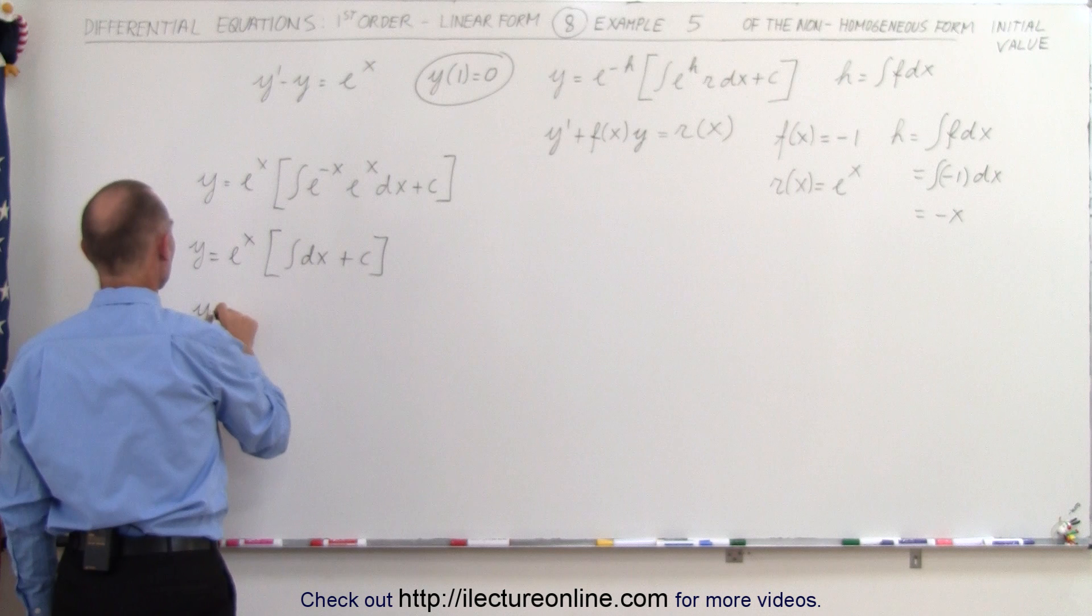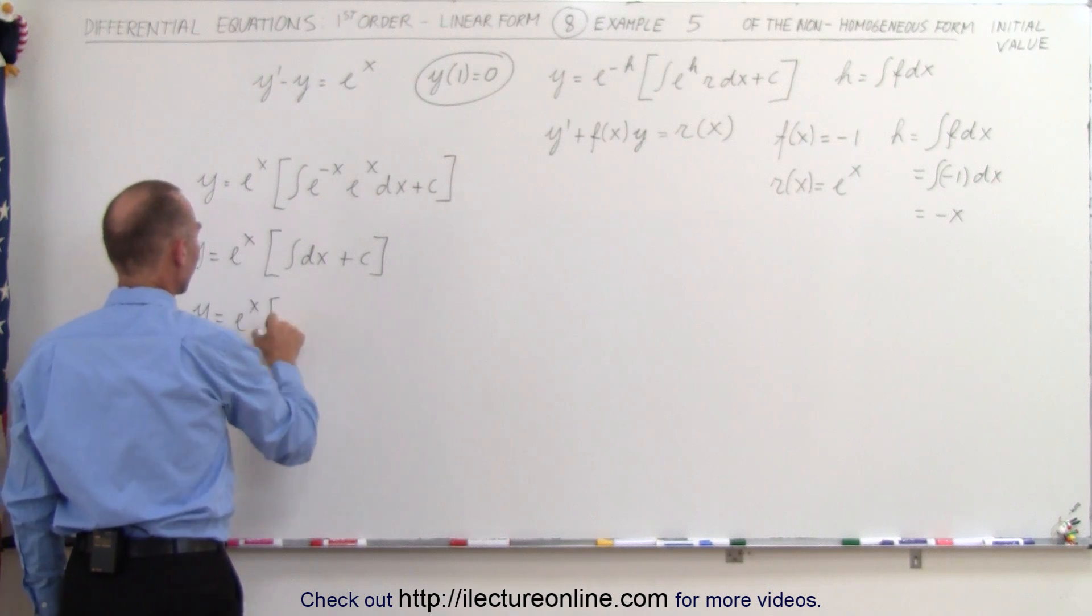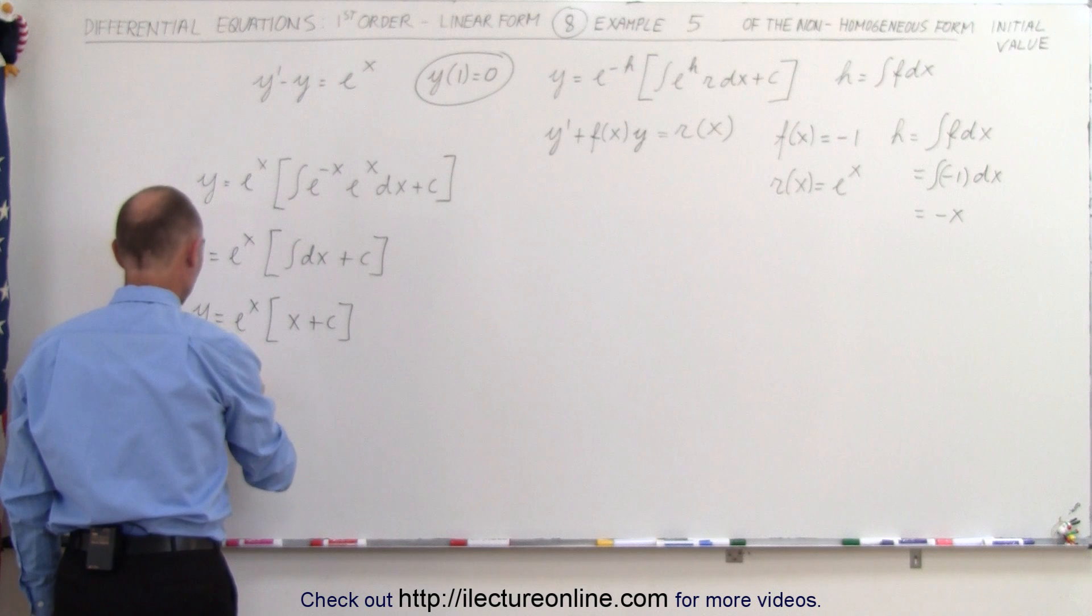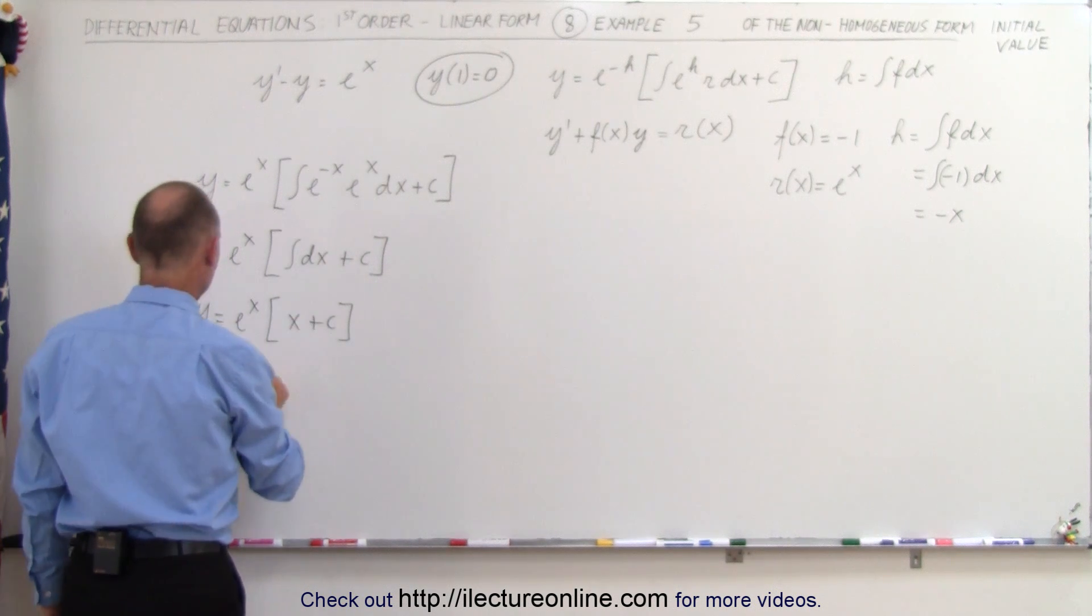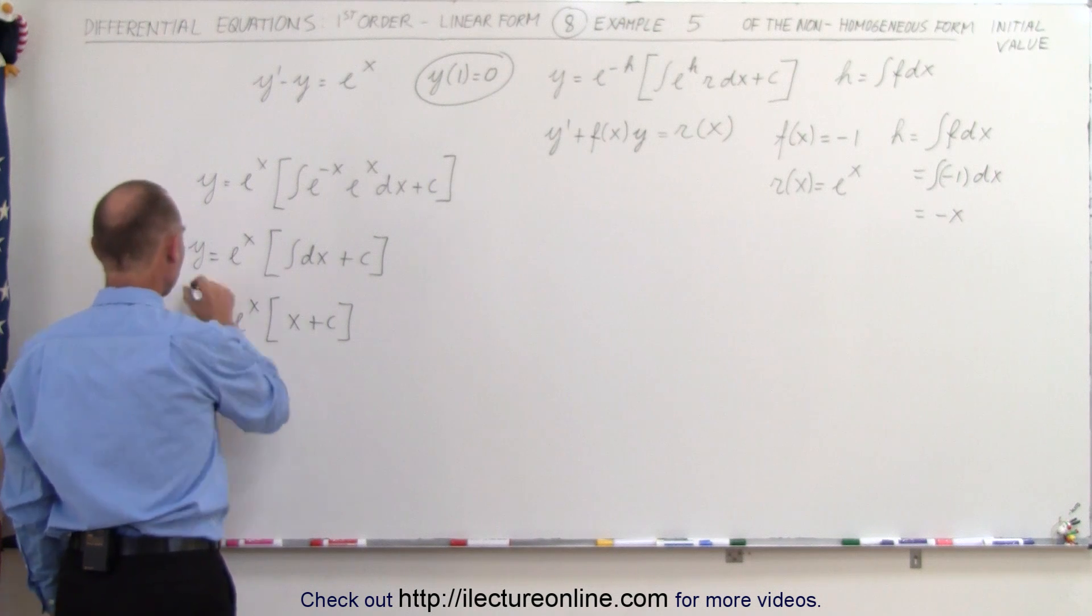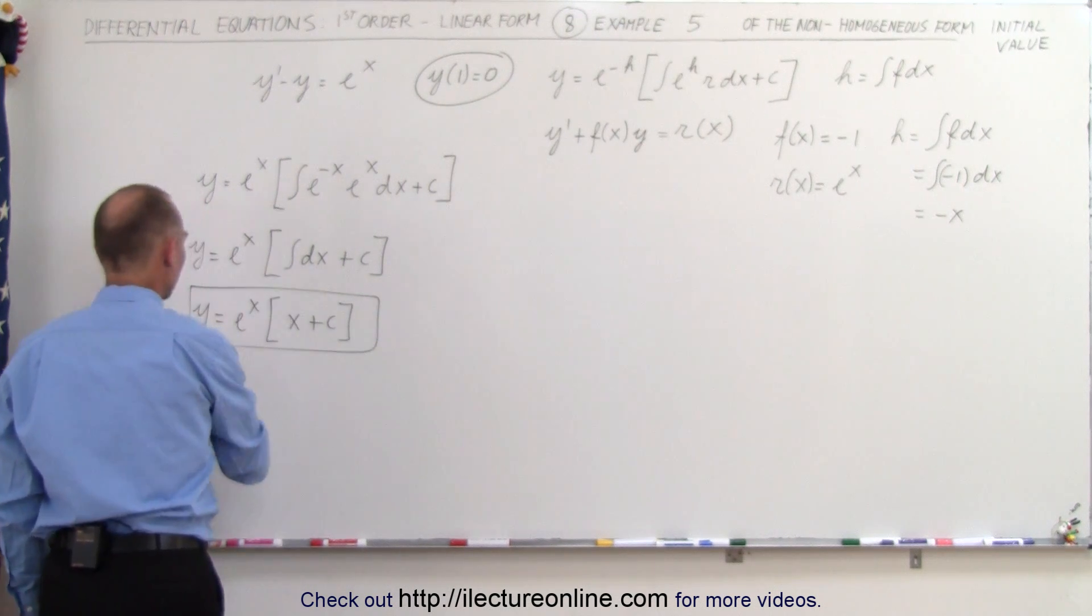And that's fairly straightforward, so y is equal to e to the x times x plus a constant of integration. So y is equal to, we can leave it like that. That is the solution to the differential equation.